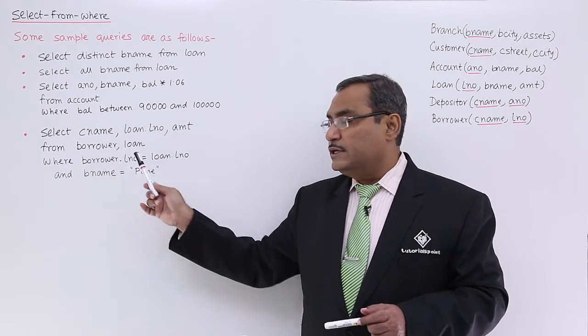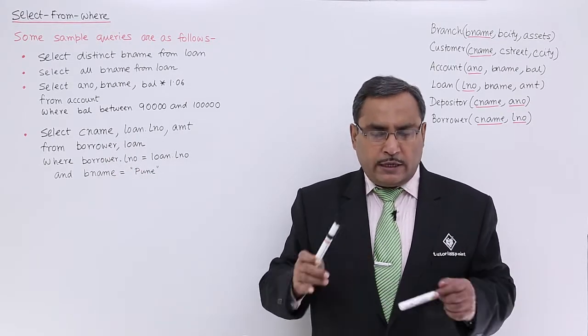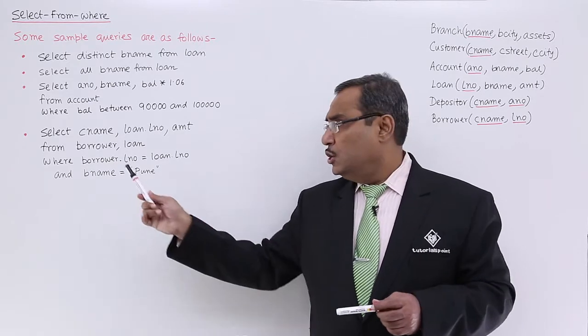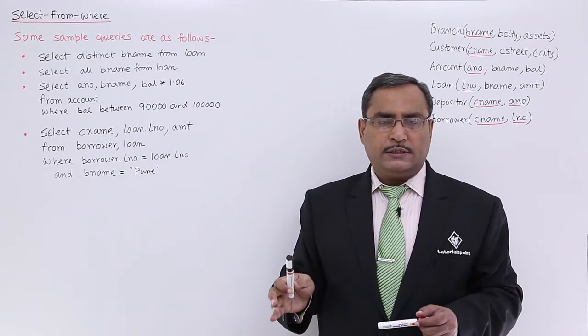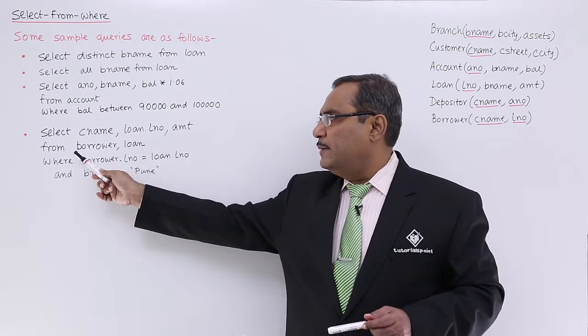in the previous video we discussed that these two relations are getting joined by the Cartesian product. That means they are getting related through the Cartesian product operation. It will produce all possible combinations of tuples between the borrower and the loan as we have written them after from.